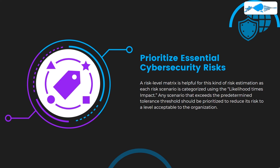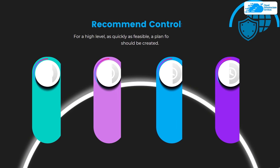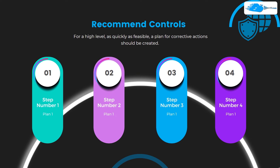At step number eight you need to recommend controls. For a high-level risk, a plan of corrective actions should be created as quickly as feasible. You need to determine the steps necessary to mitigate the risk using the risk level guide. For a high-level risk, quickly come up with a plan and take corrective actions. For a medium-level risk, you also need to create a plan, but you do not have to prioritize it at the first opportunity.